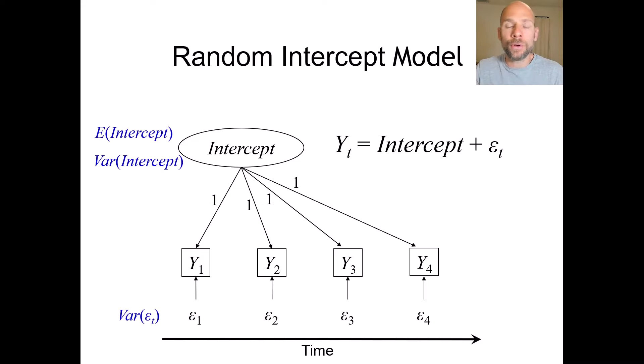They have to learn how the items work, how the tests work and so on. And then later on, maybe measurement error is reduced because people are more confident. They know how the procedure works, the test, and then they make fewer random errors. So there are differences in the measurement error variances allowed across time.